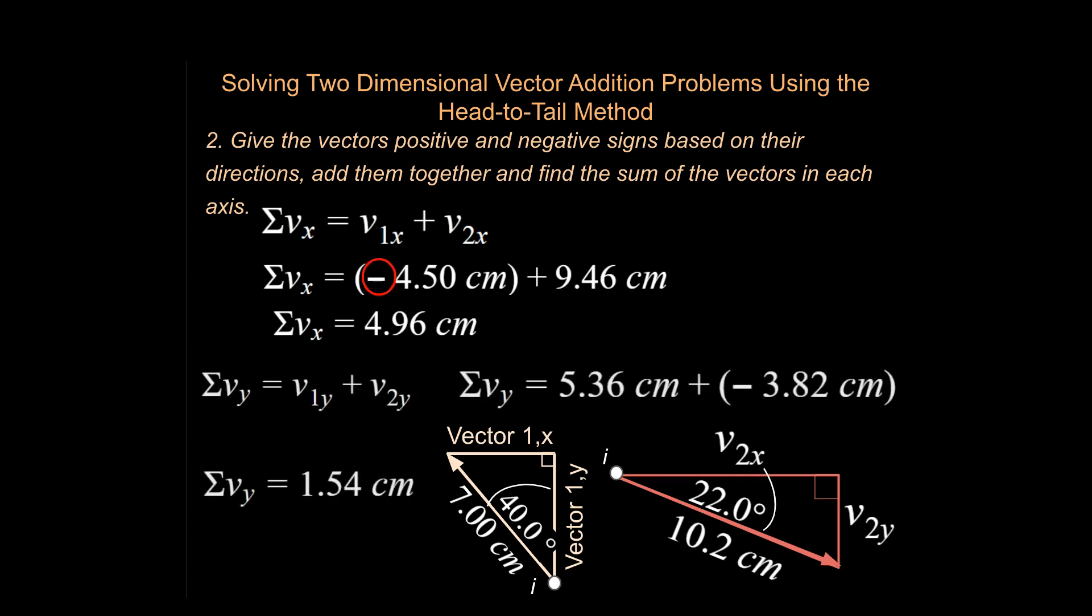And we're going to do similar things for the y-axis here. If we add up the vectors in the y-axis, we end up with one of them being positive. That's our first vector in the y. And the second vector in the y is going to be negative. Really important that you notice which vectors are negative. And that's what I'm talking about up here. Give the vectors positive and negative signs based on the directions and add them together and find the sum of the vectors in each axis.